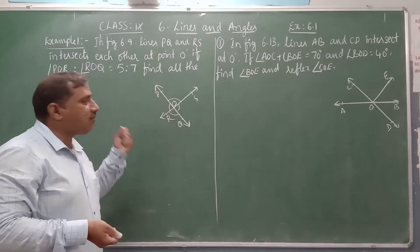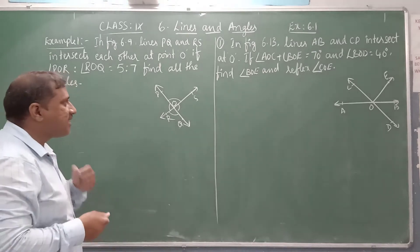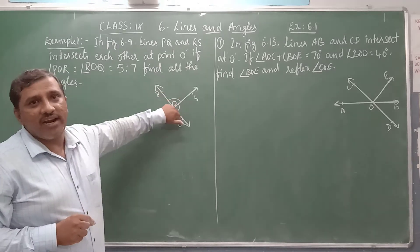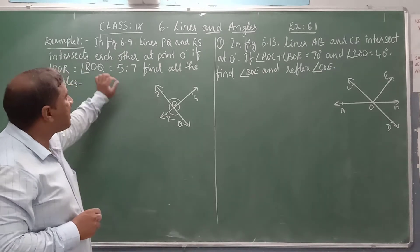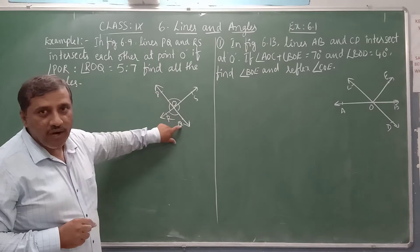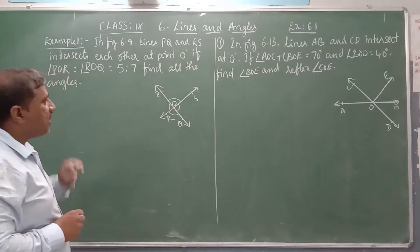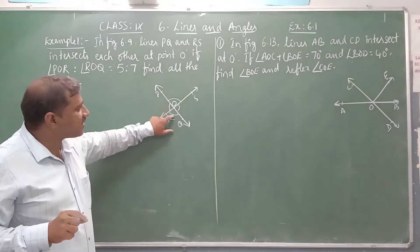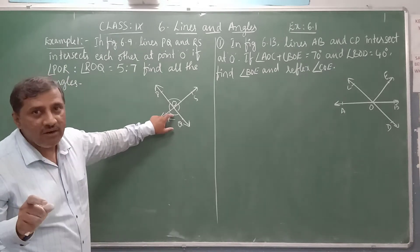Here we have two pairs of vertically opposite angles formed. As we discussed in the previous class, if we know one angle, we can find all other angles. To find any one angle with the help of the given data — the ratio of POR to ROQ is given as 5 is to 7. These two are adjacent angles and they are a linear pair of angles.